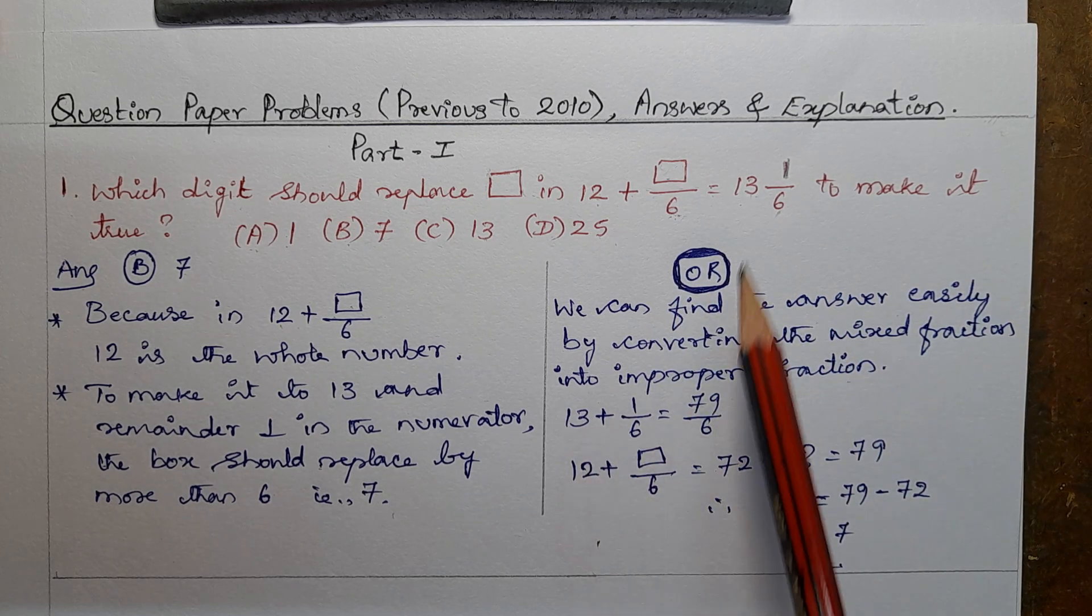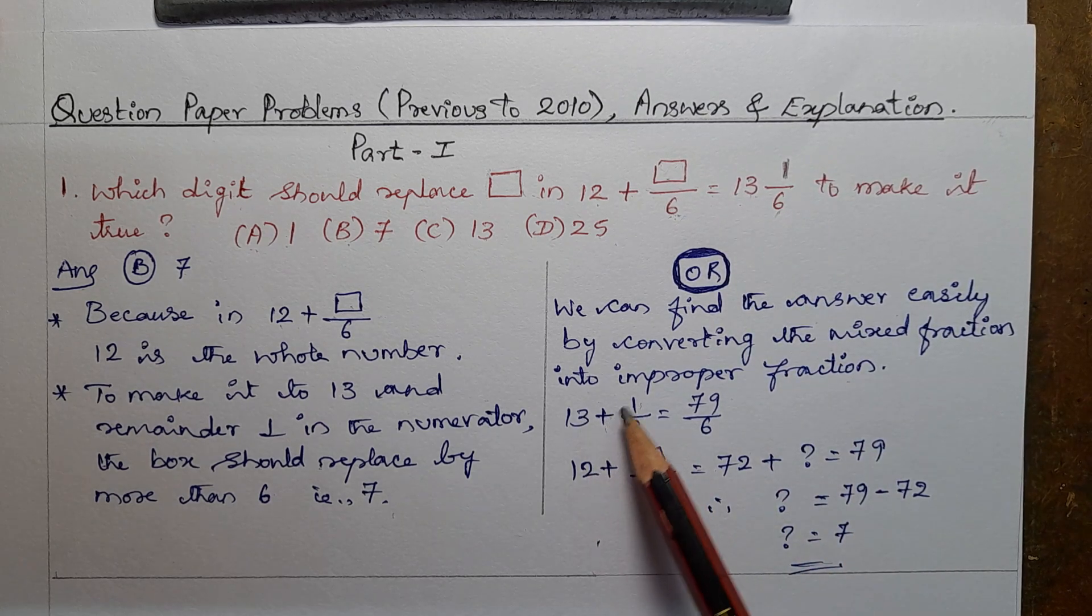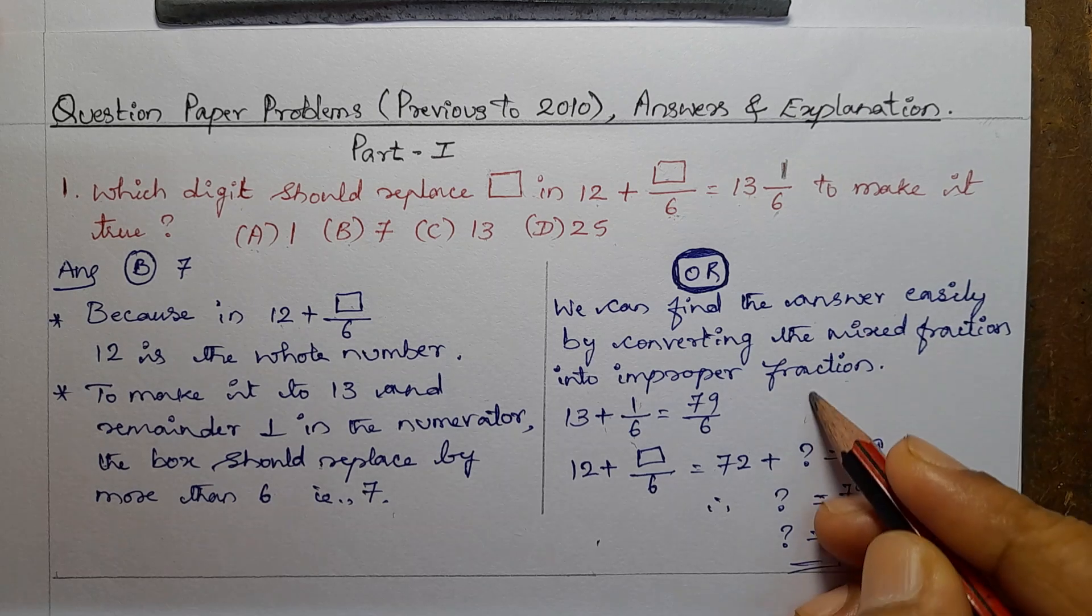Convert this mixed fraction 13 and 1/6. So 13 times 6 is 78.